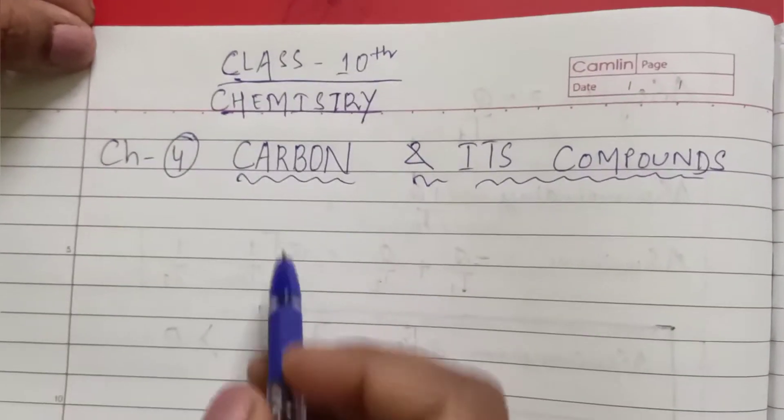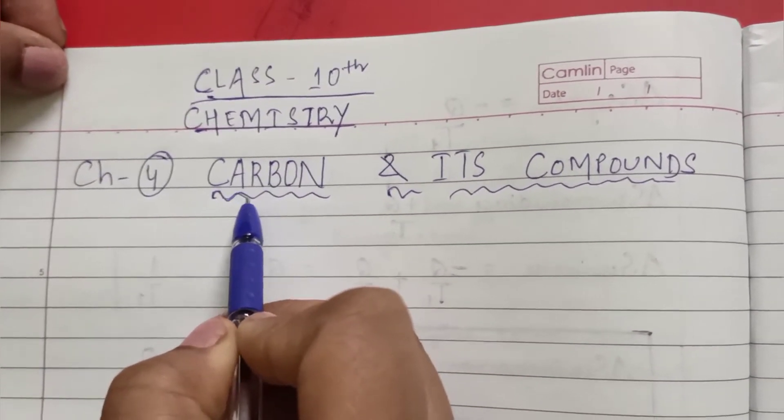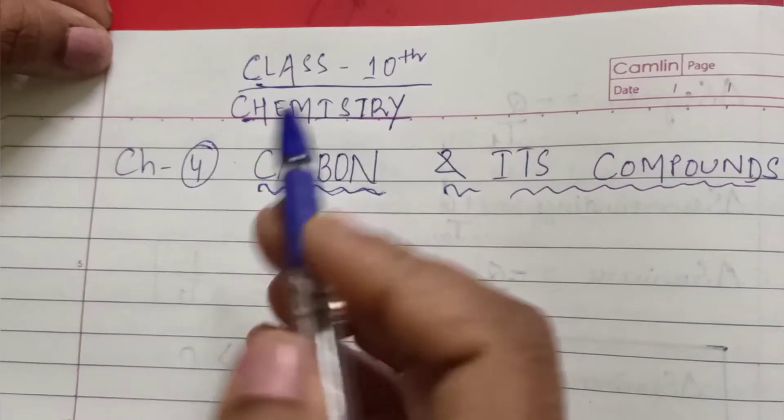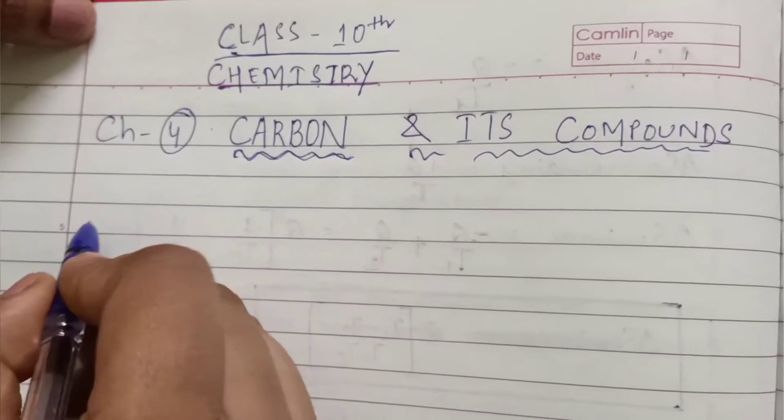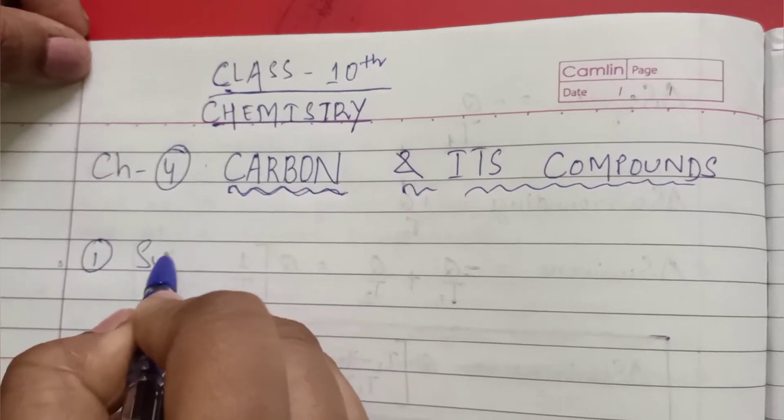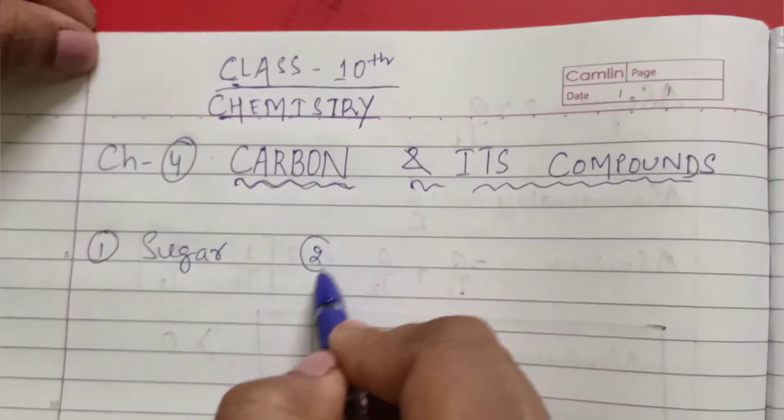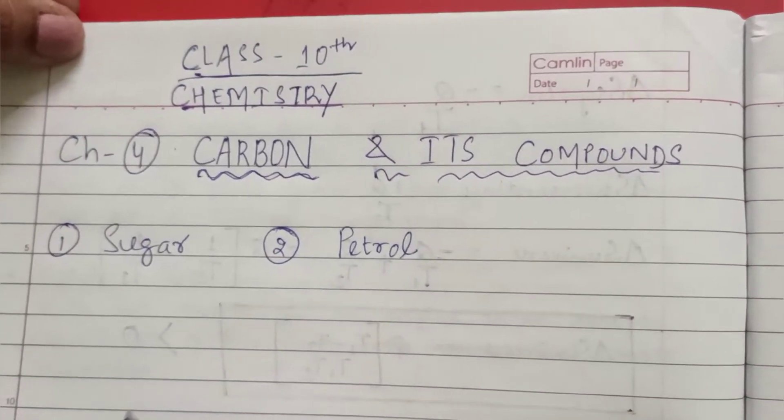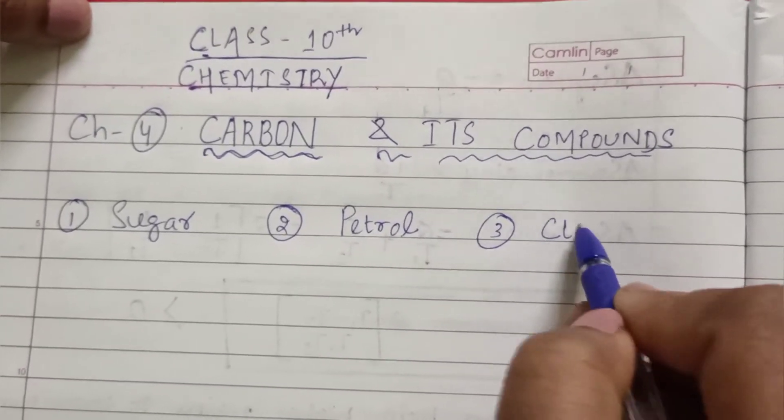Let's start the chapter: Carbon and its Compounds. Starting from when we get up early in the morning, we come across a number of substances that we use in our daily life. Suppose we sip a cup of tea - number one is sugar, it is a substance. Number two, petrol that is used in vehicles. Number three, clothes.